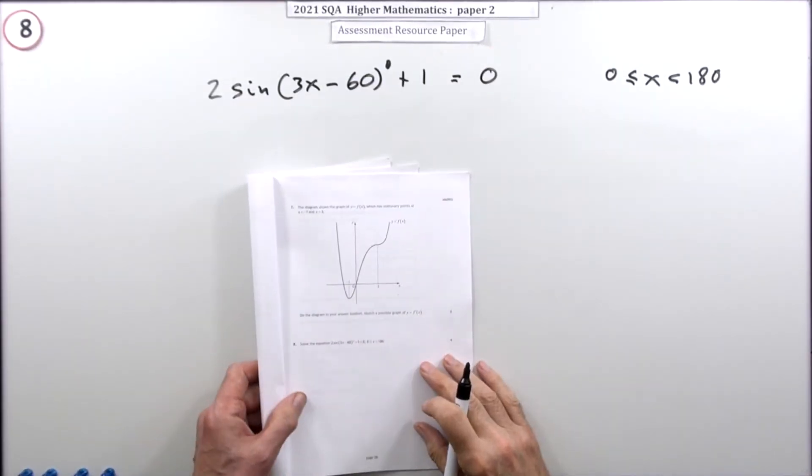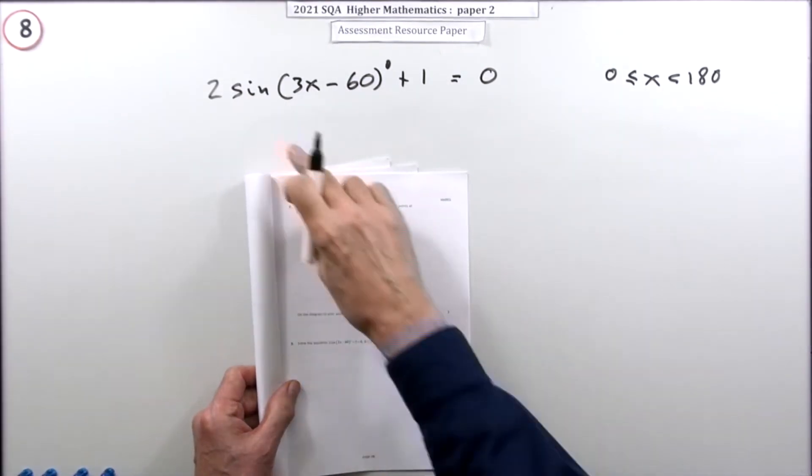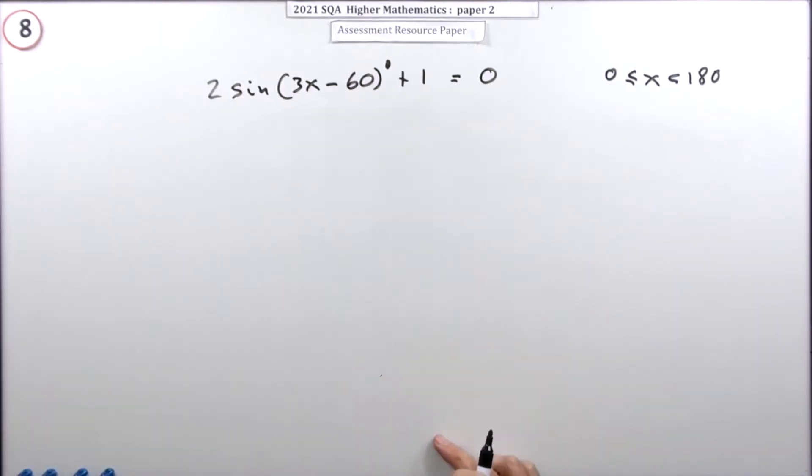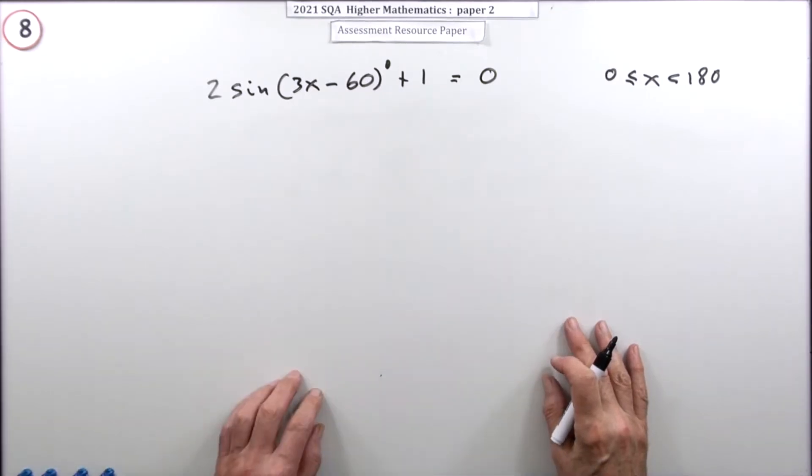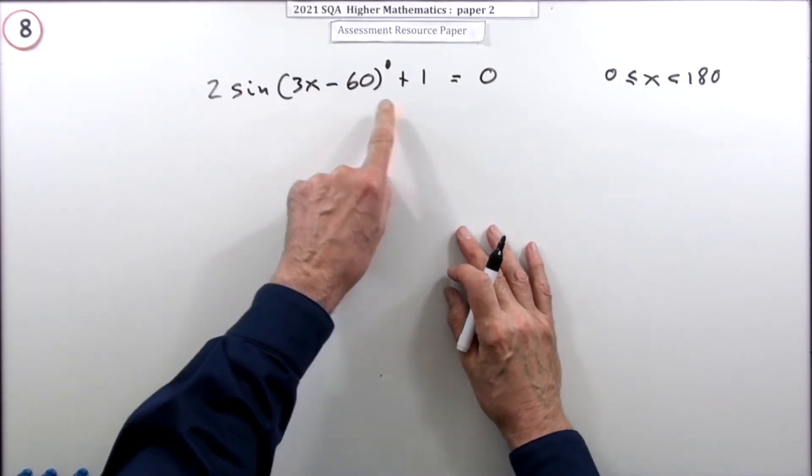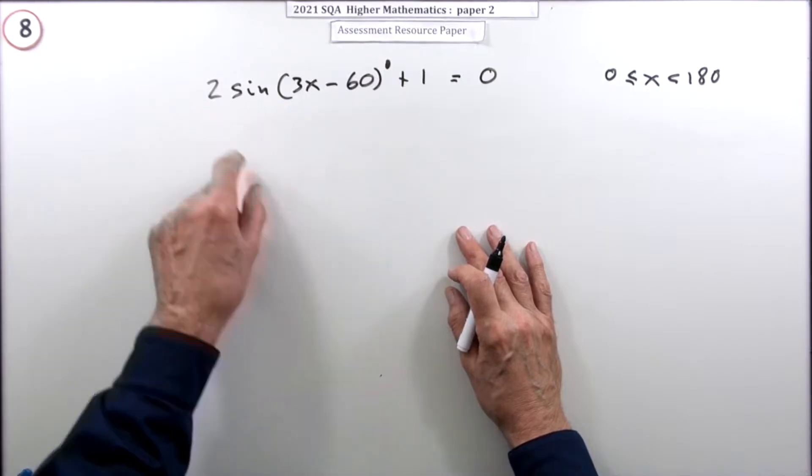Number eight from paper two of the 2021 Higher Maths, a little trick equation for four marks. Now on the surface it looks fairly straightforward, looks like something from National Five because essentially it says how do you find what x is - just get rid of all the different bits and pieces in the correct order.